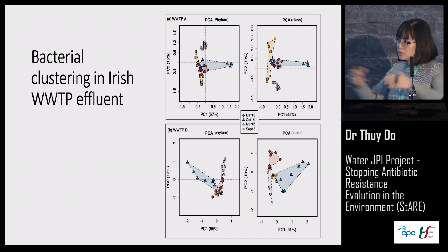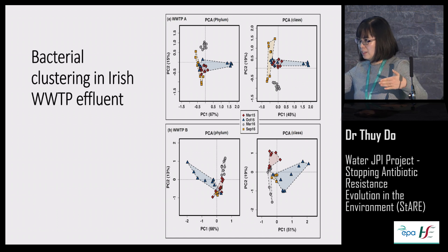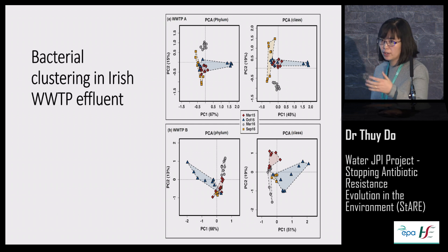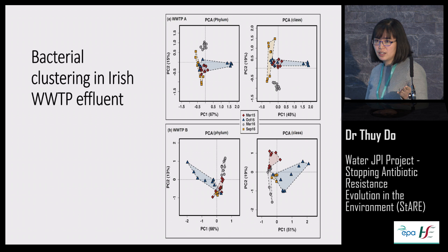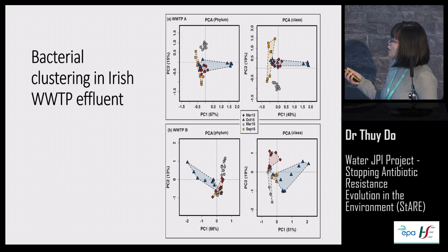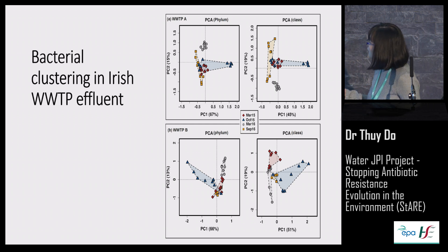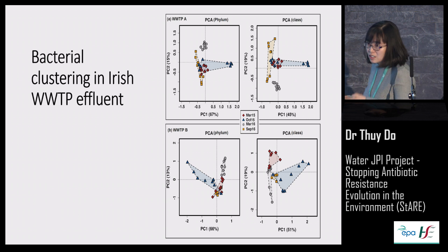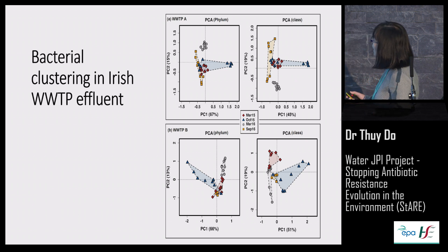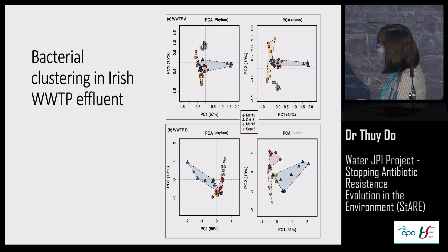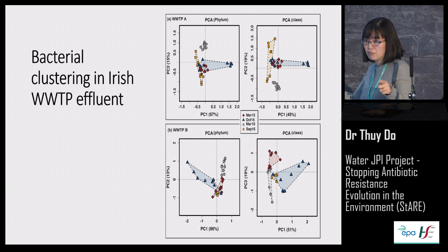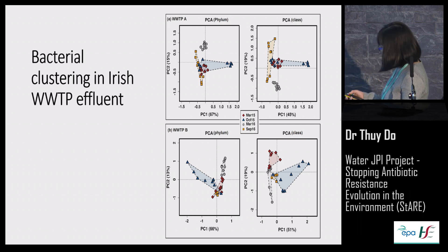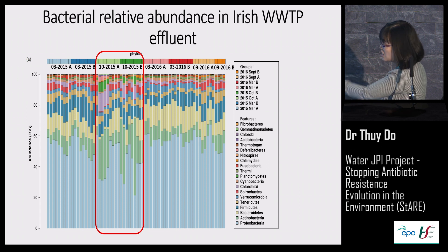When looking at the bacterial community in figures, we see the difference between bacteria at different sampling times is significant. Statistically, we performed principal component analysis, and you can see all the clusters of bacteria at each sampling time are grouped together with low distance between them. However, in October 2015, they are spread along the PC1 axis — that is, along the most abundant axis — which confirms what we found previously. This change is statistically significant.